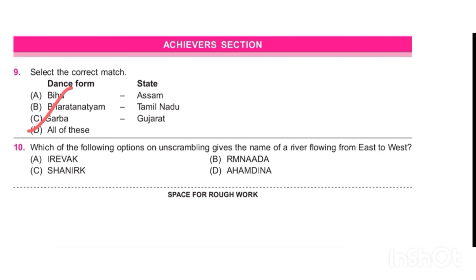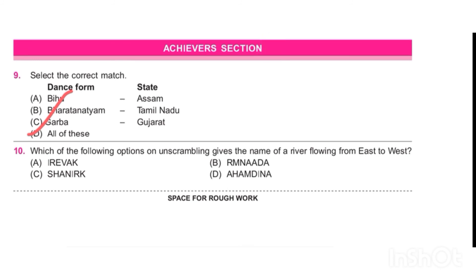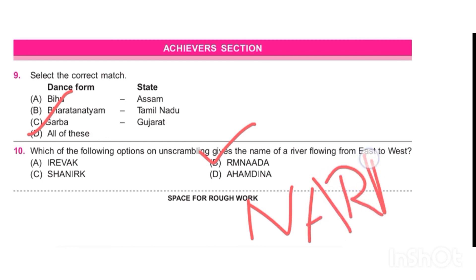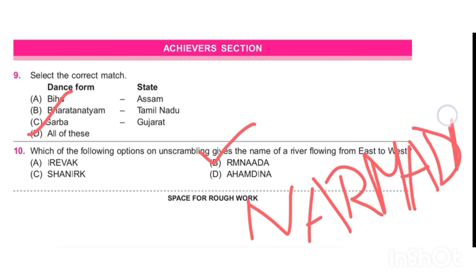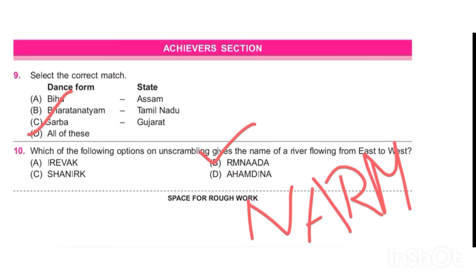Which of the following unscrambled gives the name of a river flowing from east to west? The answer is B — Narmada, spelled N-A-R-M-A-D-A. Narmada is the answer, as the others do not flow from east to west. Thanks for watching this video, hope you liked it!